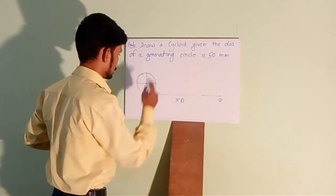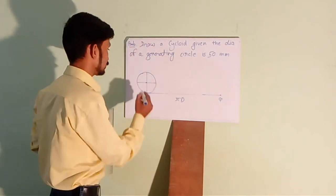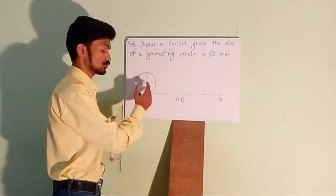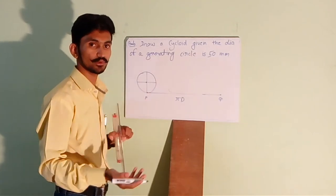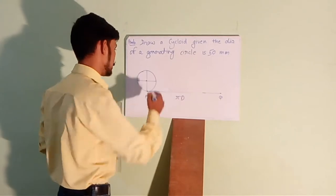I have just drawn one horizontal and one vertical line. And now, to divide this circle into 12 equal parts, we can use the trial and error method.